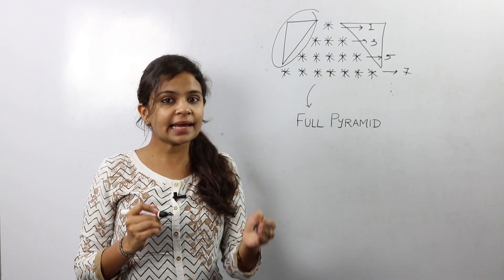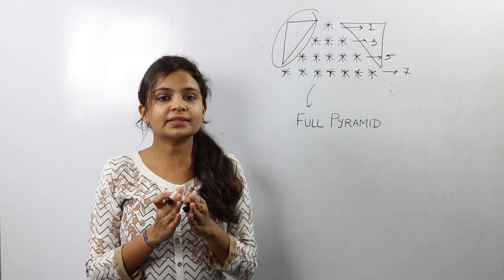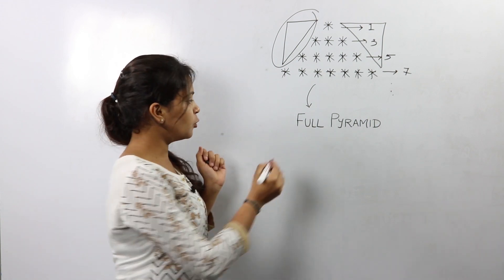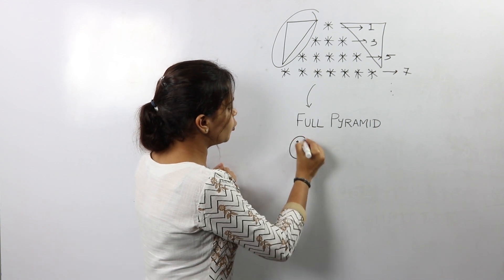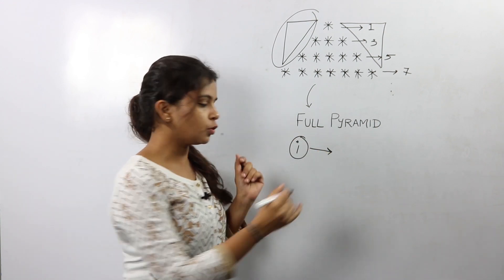Also this brings us to the next conclusion that we might need three, four loops. The first loop, that is the ith loop, is just to iterate from row to row.